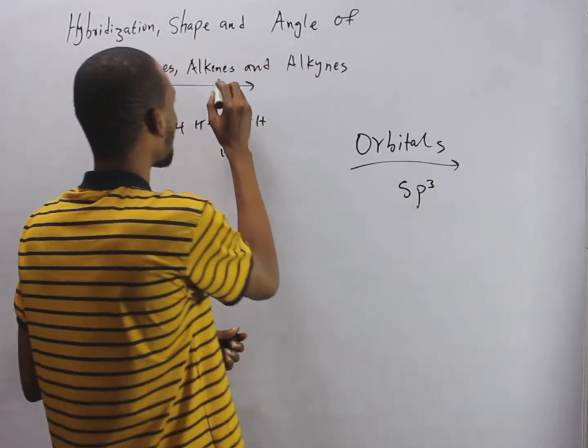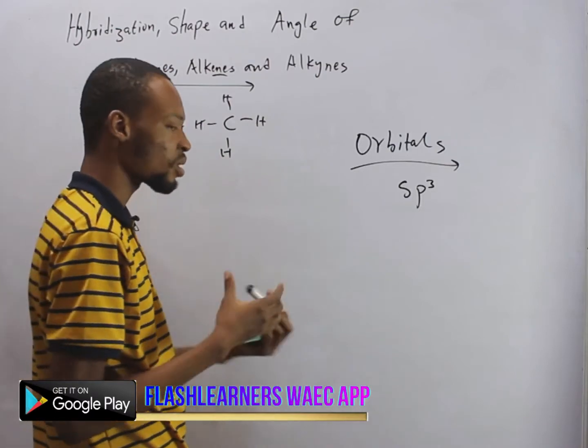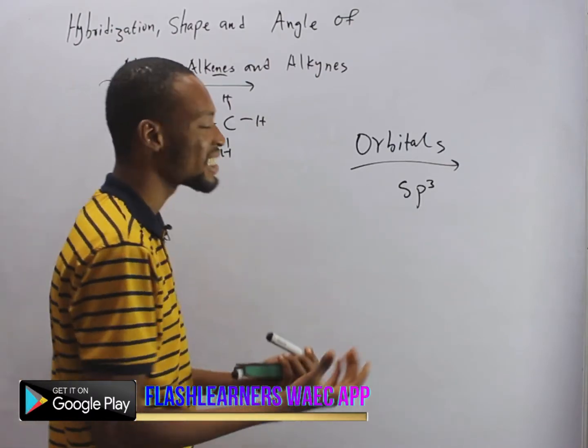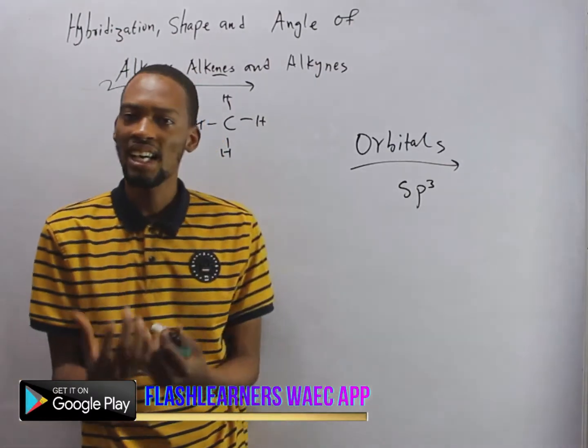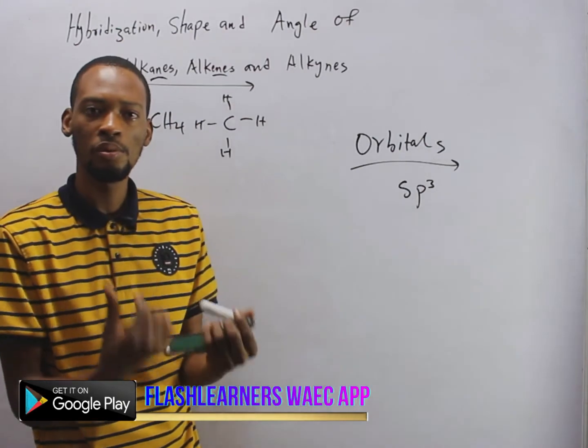Alkenes are unsaturated and contain carbon-to-carbon double bonds.